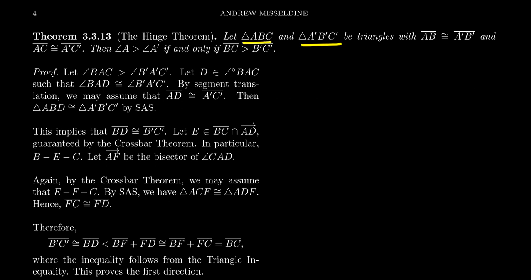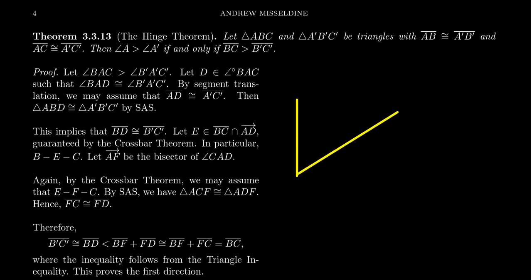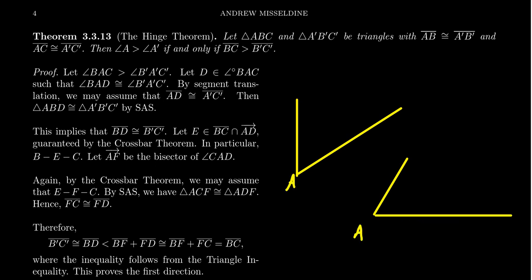We have two triangles ABC and triangle A'B'C', for which we suppose the segments AB and A'B' are congruent to each other, and the segment AC is congruent to A'C'. So if we illustrate this, we have something that basically looks like the following. Here's A, here's A', here's the point B, here's the point C, here's the point B', and here's the point C'. By assumption, segment AB is congruent to segment A'B', and segment A'C' is congruent to segment AC. You'll notice I omitted the third side of these triangles.